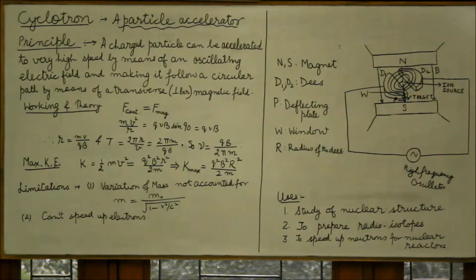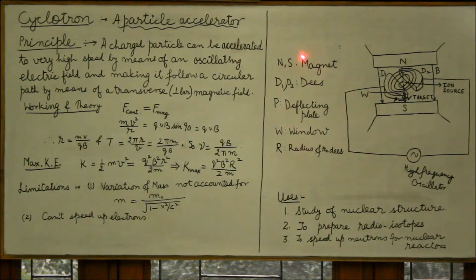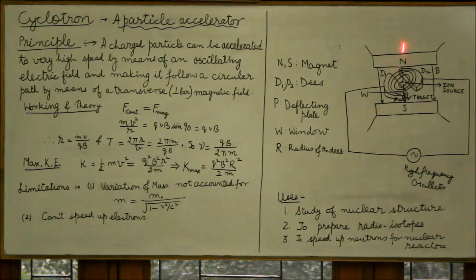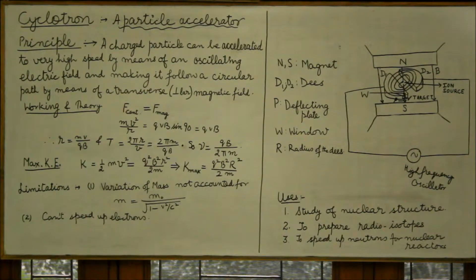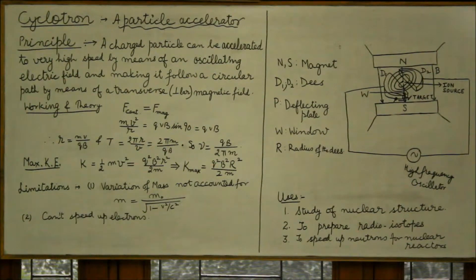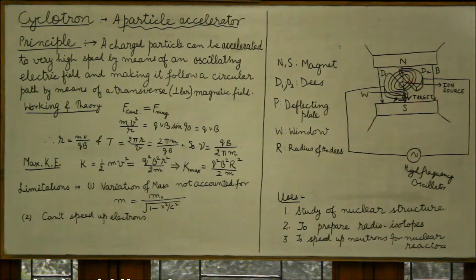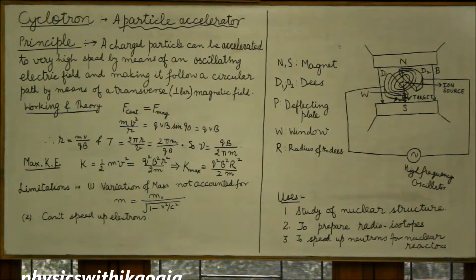Now the construction of the cyclotron: we have a powerful electromagnet where N and S are the poles, so the magnetic field is directed downward from north to south. There are two Ds — D1 and D2 — which are hollow half cylinders separated by a small distance, called Ds because of their shape. Viewed from the top, a hollow half cylinder looks like a D.